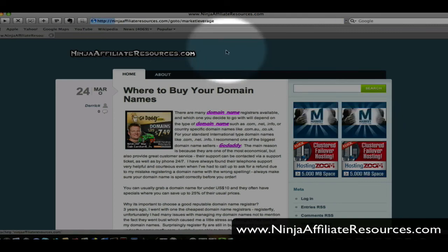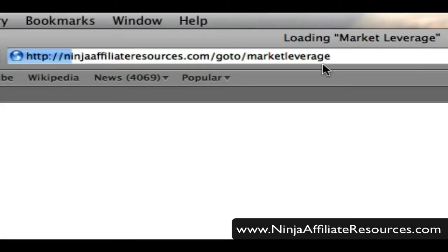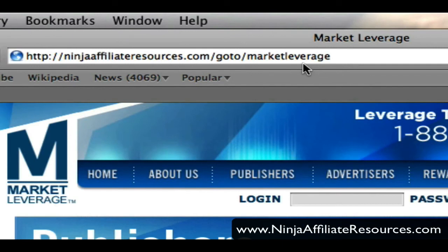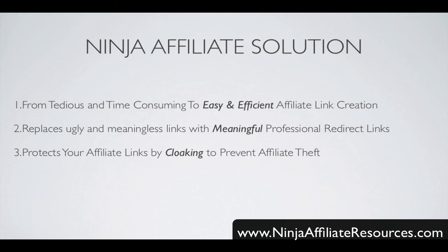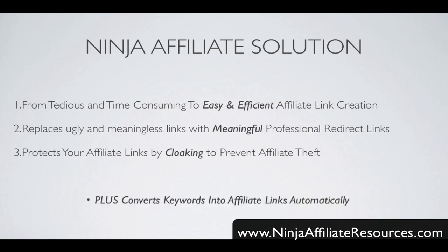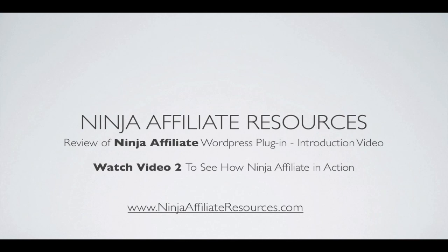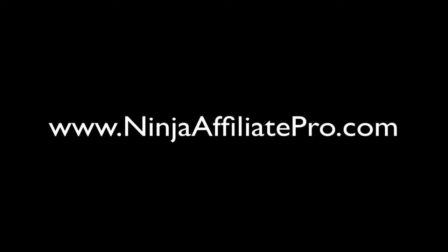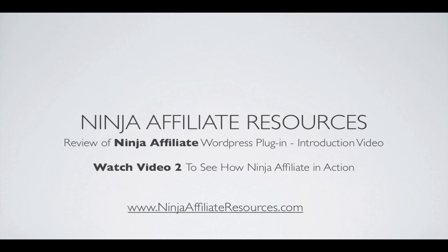It also cloaks your link. So when you click through on this ad, you'll notice my professional redirect link appearing in the address bar and my affiliate link is not revealed at all, effectively stopping others from replacing my unique affiliate ID with theirs and stealing my commission. As you can see, Ninja Affiliate solves these three problems, but it also does much more — including probably the biggest feature of Ninja Affiliate: being able to automatically convert keywords into affiliate links. To check out Ninja Affiliate yourself, go to www.ninjaaffiliatepro.com. Or if you want to learn more about this great WordPress plugin, watch the next video and see the automatic keyword linking feature in action.